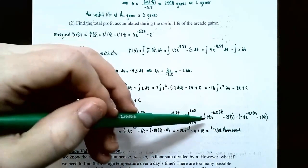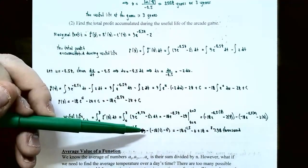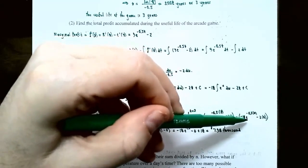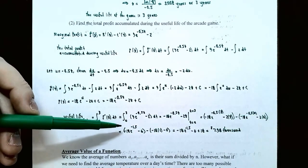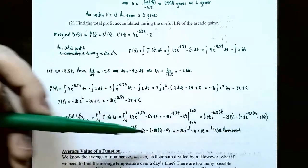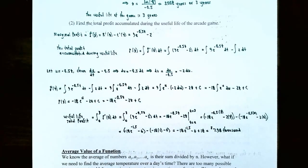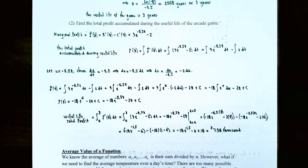Subtracting the lower limit evaluation from the upper, we have negative 18 e to the negative 1.5 minus 6, minus negative 18, which is plus 18. Simplifying and rounding to two decimal places gives approximately 7.98. Since profit is in thousands of dollars, the company accumulates about $7,980 in profit over the three-year useful life of the arcade game.